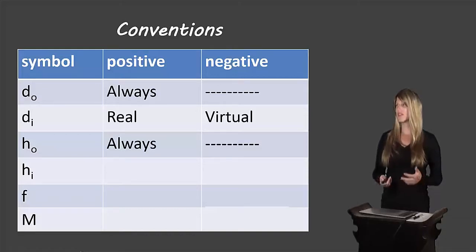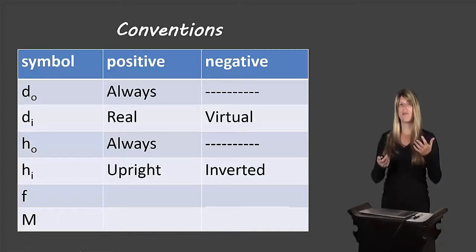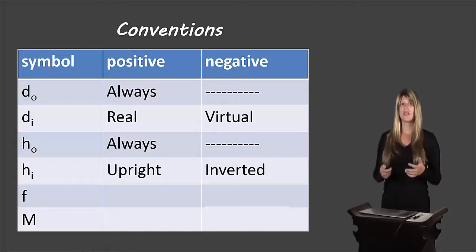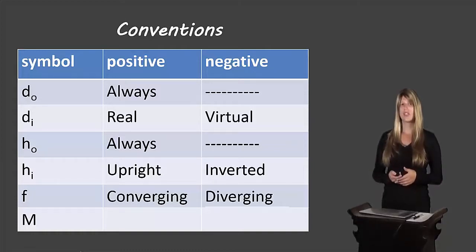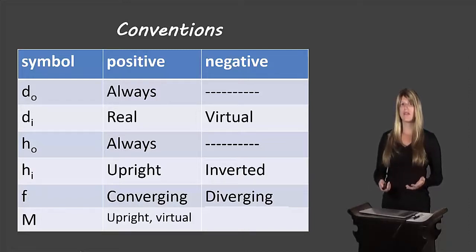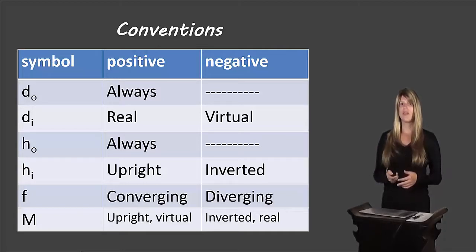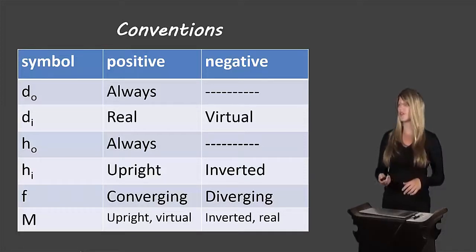The height of the object HO is always positive in every question. The height of the image HI is positive when the image is upright, and negative when the image is inverted — so if it tells you the image is three centimetres tall but inverted, you write negative three in your equation. For a converging lens, the focal length is positive, and for a diverging lens it is negative. For magnification, if the image is upright and virtual it is positive, and if it's inverted and real it will be negative. These are all our conventions, and we need to make sure we're adding those positive and negative signs in correctly to get the correct answer.